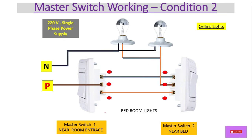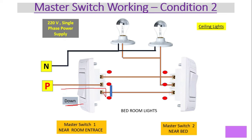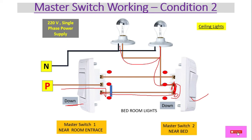Condition two: both switches are in the down position. Power travels through the lower contact to the corresponding terminal, and since the second switch is also down, its contact connects to the load through its common point. At this condition also, both lights will be on.